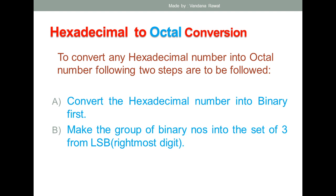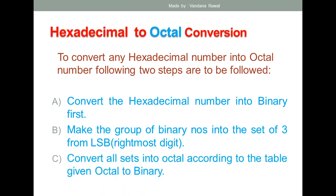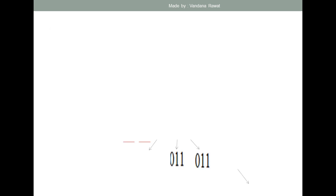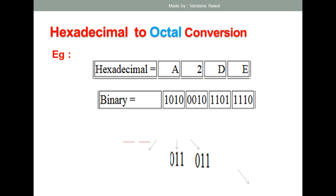The third step is: once you have made the groups of three, you convert all the binary sets into octal using the octal-to-binary conversion table. There are two tables — one showing how to convert octal digits 0 to 7 into binary, and another for hexadecimal-to-binary conversion. In the final step, you refer to the octal-to-binary table to convert each binary set into its octal equivalent.